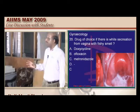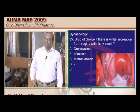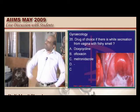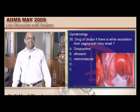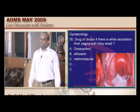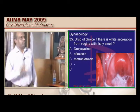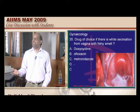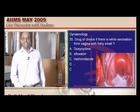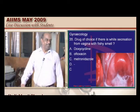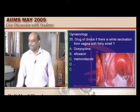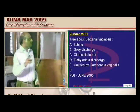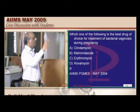Bacterial vaginosis — fishy odor of vaginal discharge. It is definitely a favorite question. Our approach is to analyze what to read versus what not to read. The drug of choice for bacterial vaginosis is metronidazole — PGI June 2005, AIMS May 2004 and December 2004 question.